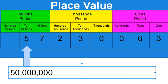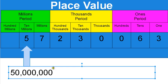Remember, we go from the ones period to the thousands period to the millions period. Between each period we put a comma. If we're trying to find out the value of a digit, we put that digit down and every digit that comes after it is going to be a zero. So this five in the ten millions place is worth 50 million.